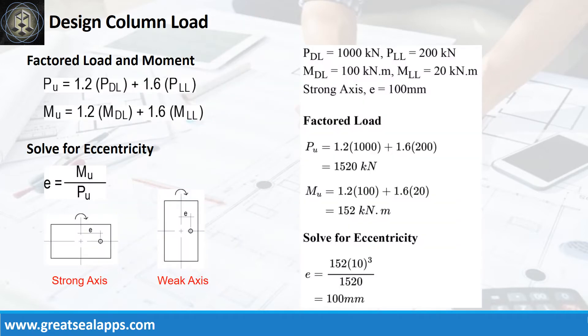Given axial dead load equals 1000 kN and axial live load equals 200 kN, the factored axial load is 1520 kN. Given moment dead load equals 100 kNm and moment live load of 20 kNm, the factored moment is 152 kNm for an eccentricity of 100 mm at the strong axis.